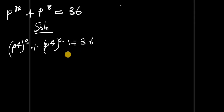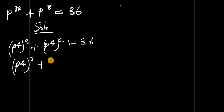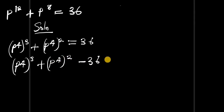The next step is to rearrange this, so we have p to the power of 4, all to the power of 3, plus p to the power of 4, all to the power of 2, minus 36 equals zero. We are going to split down this 36.